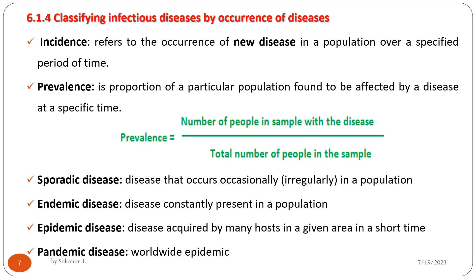Classifying infectious diseases by occurrence: incidence refers to the occurrence of new disease in a population over a specified period of time. Prevalence is the proportion of a particular population found to be affected by a disease at a specific time — it equals the number of people in the sample with the disease divided by the total number of people in the sample.